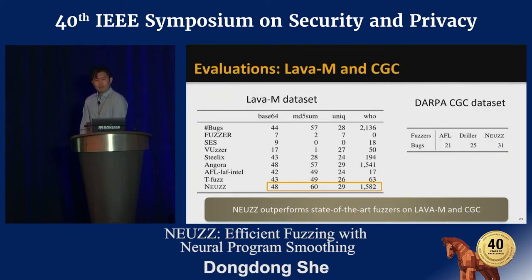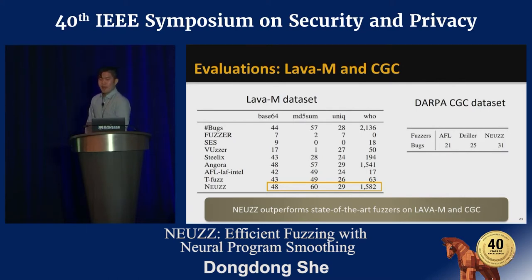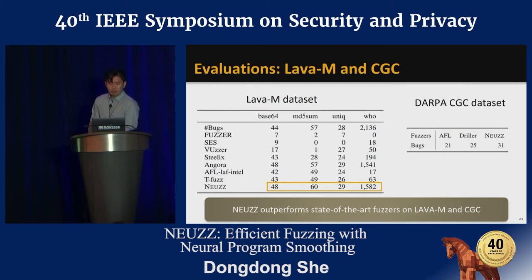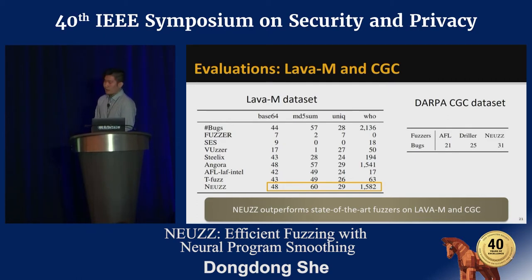LavaM and DARPA-CGC datasets are two fuzzing datasets based on magical word comparisons. We ran NOOS on full LavaM programs and 50 DARPA-CGC binaries against state-of-the-art fuzzers. NOOS identifies critical parts of input which determine the magical check-in branches, then performs local exhaustive searching to break them. So it can outperform state-of-the-art fuzzers on LavaM and CGC.